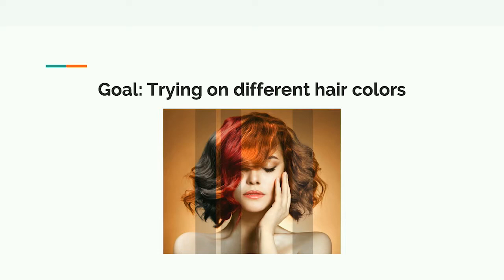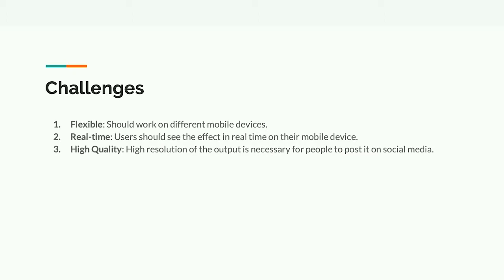The goal is to enable users to try on different hair colors and hairstyles in real time on their mobile app. There are a couple of challenges: it should be flexible, working on any mobile device — Android or iPhone. It should run in real time, from different angles, working robustly. And it should be high quality — imagine you want to try on a different hair color, take a picture, share it on social media, and see how your friends react to it.